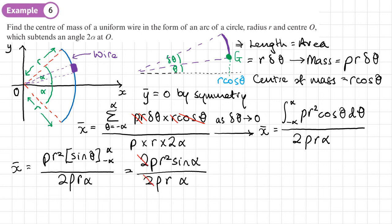x-bar = R sin α / α is our centre of mass in the x direction. Again, this is a standard result which you can use directly unless the question asks you to prove it using first principles.